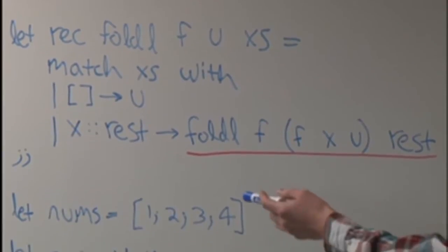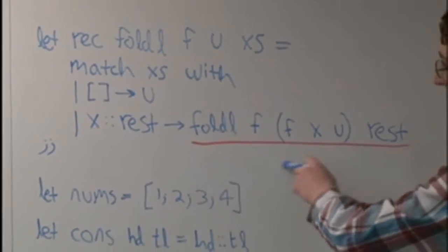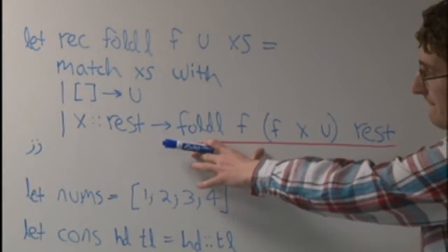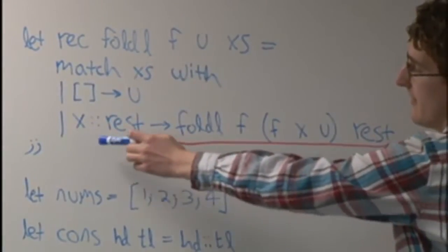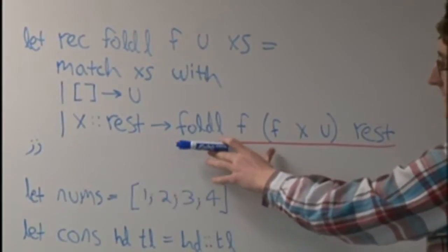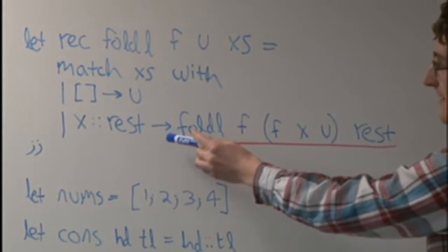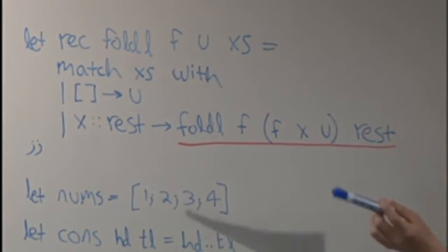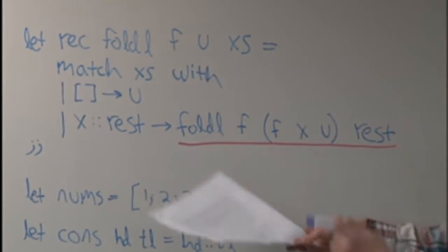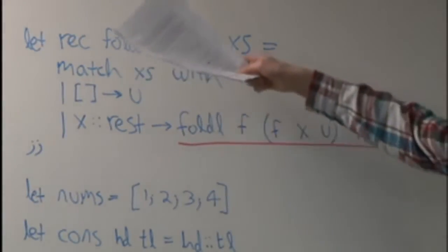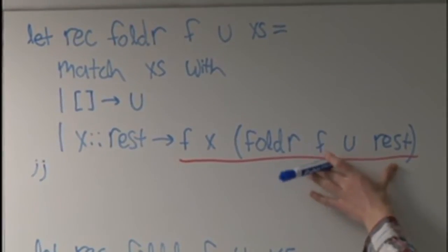We visually identify fold left as the tail recursive one because, on one of the control flow paths where it goes through this particular match case, the last thing it does is call itself. This position is the tail position, which allows for a tail call. So fold left calls fold left with a few arguments, meanwhile fold right calls another function that involves fold right and has to evaluate that first.